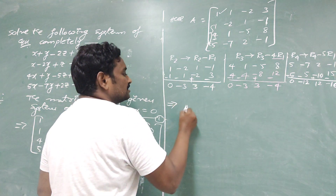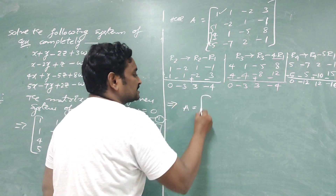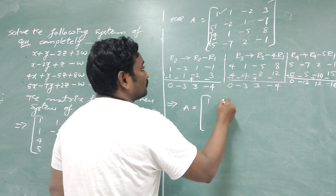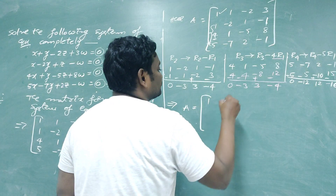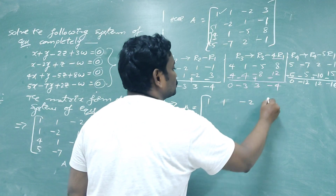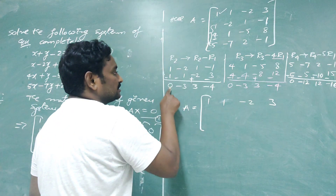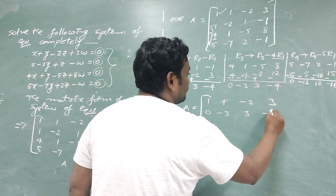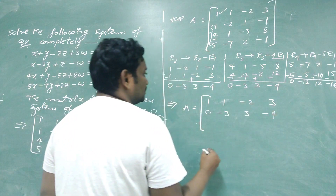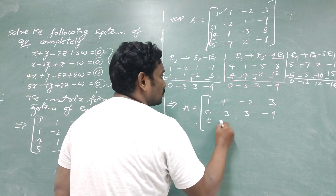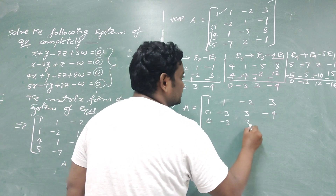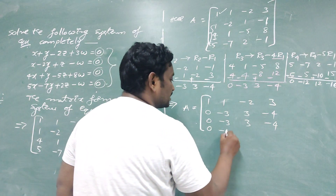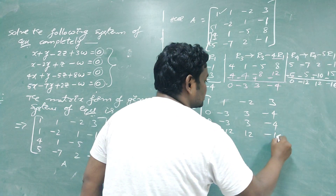With the above operations, coefficient matrix A becomes: row 1: 1, 1, -2, 3; row 2: 0, -3, 3, -4; row 3: 0, -3, 3, -4; row 4: 0, -12, 12, -16.